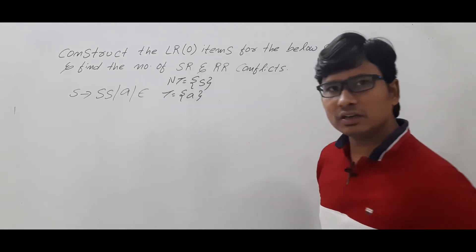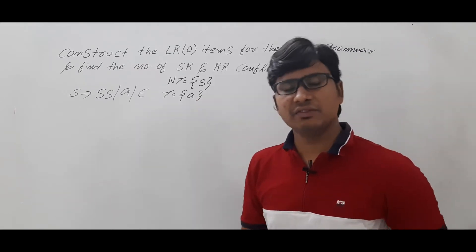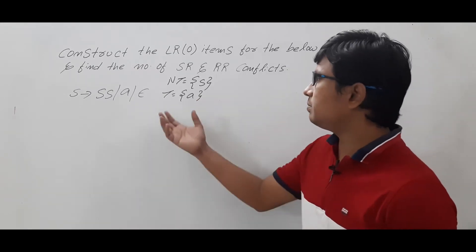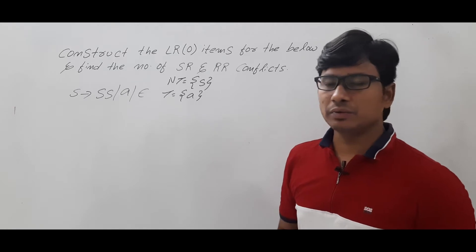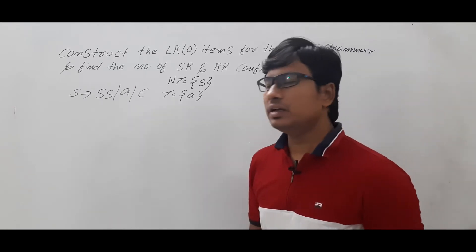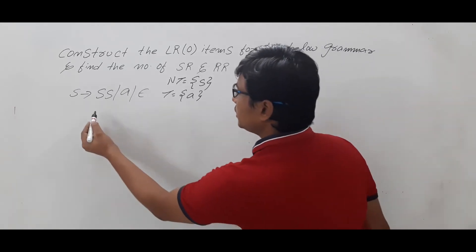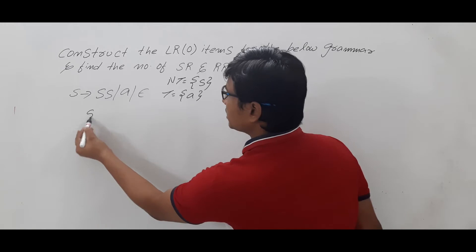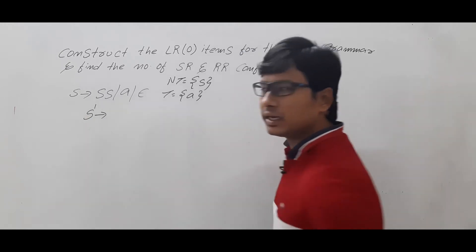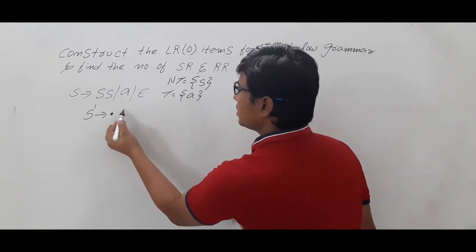Epsilon I will not consider, because if I consider it, its length is 0. So what I can say — I need to take an augmented production and I need to write it as S' → •S.